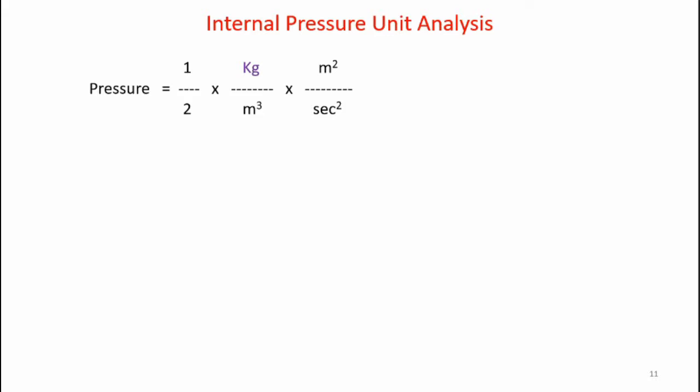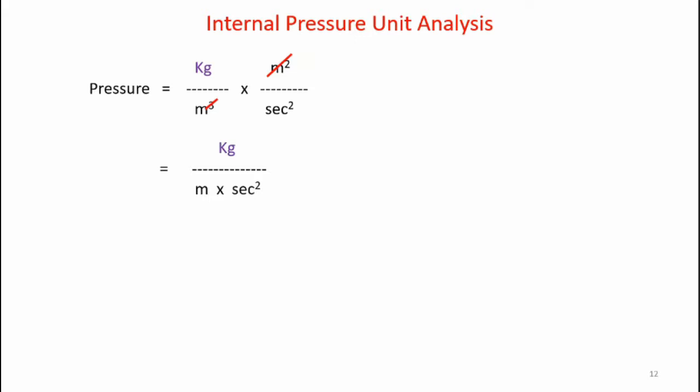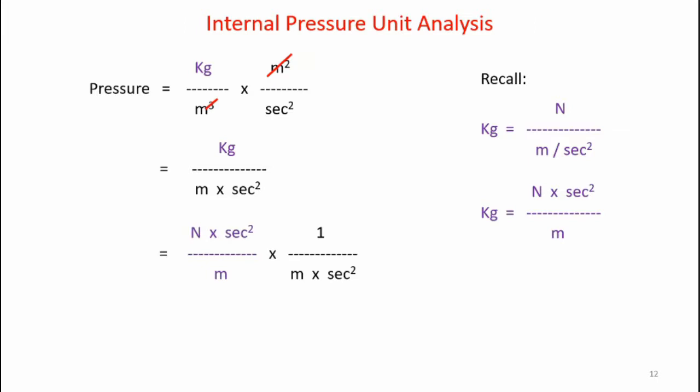Let's take a quick look at that equation for dynamic pressure and perform a unit analysis to see if it comes out to units of pressure. Pressure is equal to one half times density times velocity squared. One half has no units, so pressure from a unit perspective is kilograms divided by meters cubed times meters squared over second squared. Some of the meters cancel out, so pressure becomes kilograms divided by meters times second squared. Recalling that a kilogram is a newton times second squared divided by meters, and substituting that in, the units cancel and we ultimately end up with pressure as newtons per meter squared — which is indeed the units for pressure.